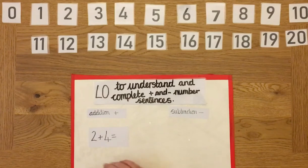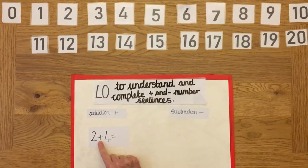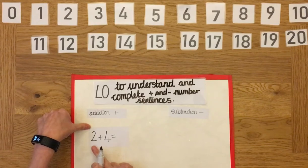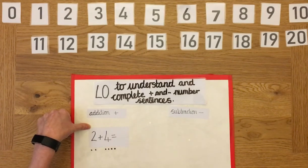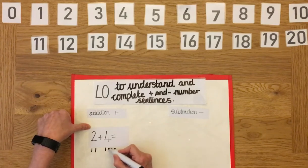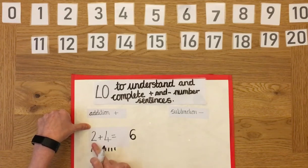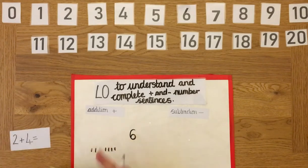Let's look at our first number sentence. Is it adding or subtraction? It's an adding one, isn't it! So we need to add this number with this number. I'm going to have two dots for the two, and four dots for the four. Let's add these together: one, two, three, four, five, six. So our answer is six — two add four equals six!